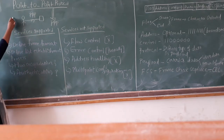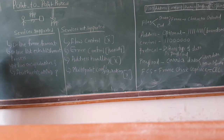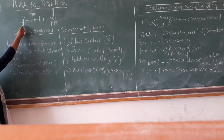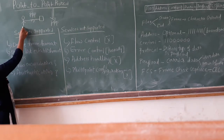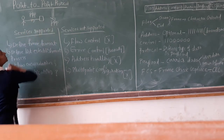Today, we will start with the next topic of data link control, that is point-to-point protocol. Point-to-point protocol is used where there is an obligation to be known. For example, let us assume a user wants to access the internet — in such a case, point-to-point protocol is used.